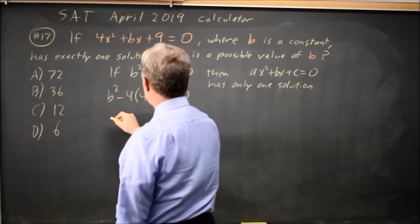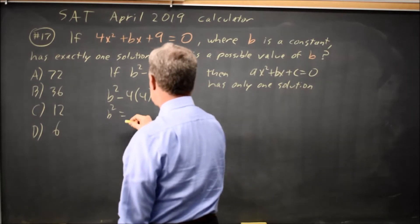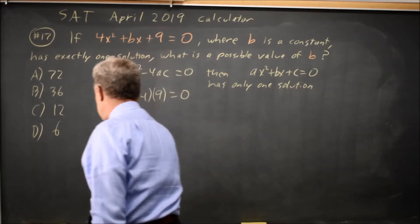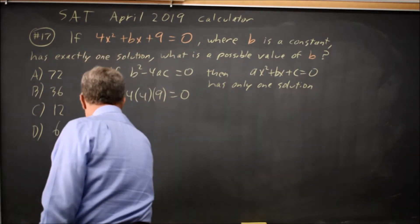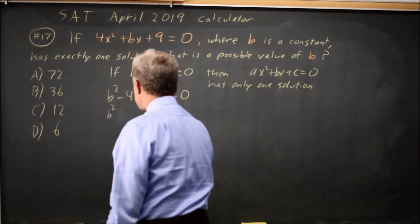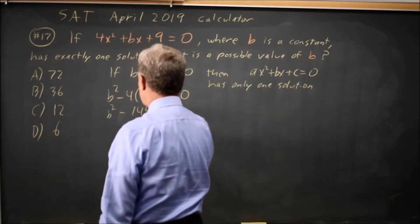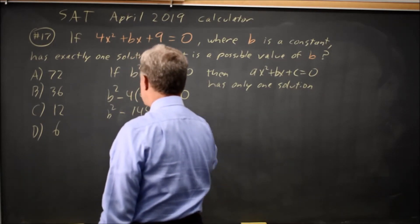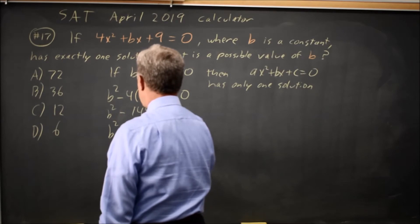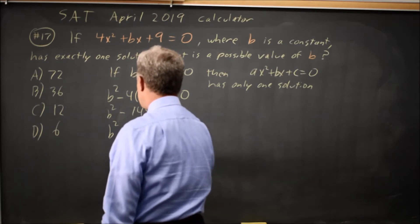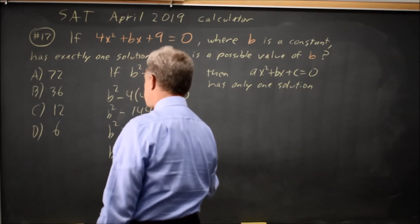So b squared equals 9 times 16, which means b squared minus 144 equals zero, and therefore b squared equals 144. So b equals positive or negative 12.